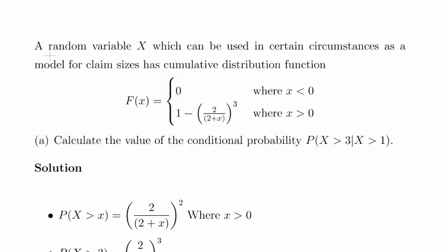In this presentation we're going to look at continuous random variables. A random variable X, which can be used in certain circumstances as a model for claim sizes, has a cumulative distribution function F(x) = 0 where x is less than 0, or 1 minus (2/(x+2))^3 where x is greater than 0. Calculate the value of the conditional probability P(X > 3 | X > 1).